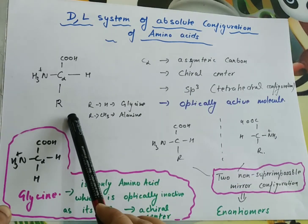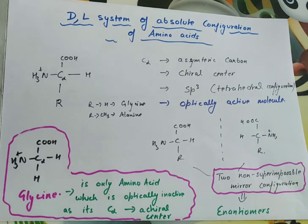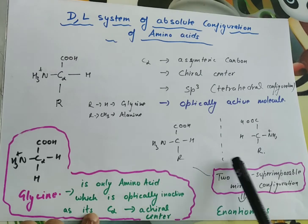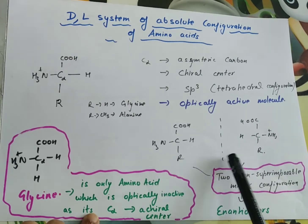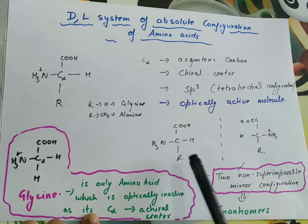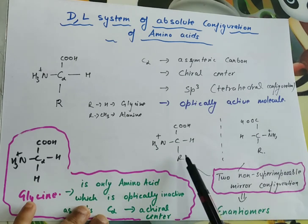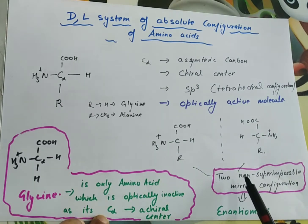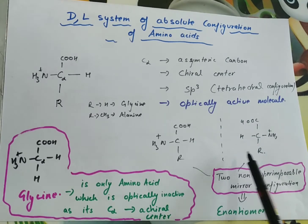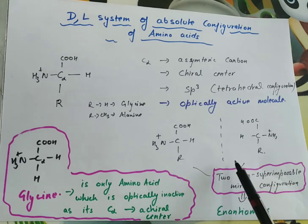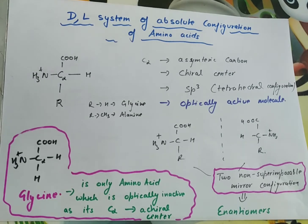Since there are four different groups attached to C-alpha, these groups can arrange into two unique spatial configurations which are mirror images of each other. One form has NH3 on one side, and the other is its mirror image. These two non-superimposable mirror configurations are called enantiomers. All amino acids except glycine can have two such enantiomeric configurations.